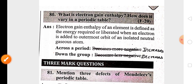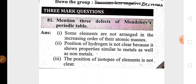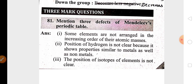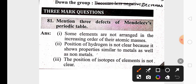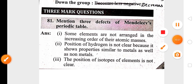The defects or demerits of Mendeleev's periodic table are important: he did not arrange elements in increasing order of atomic mass in all cases, the position of hydrogen is not fixed, and the position of isotopes is not mentioned. These are some of the important question answers from the third chapter.